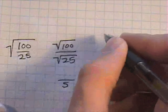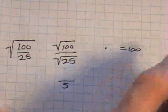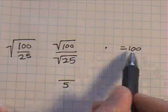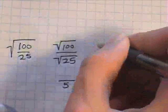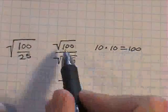This one we haven't done before, so let's just sort of look at it. So one hundred. Something times itself equals one hundred. Ten times ten equals one hundred. So this is ten on top.